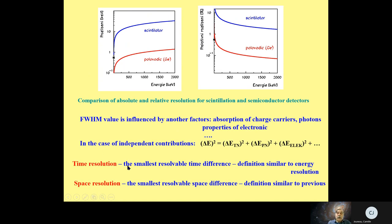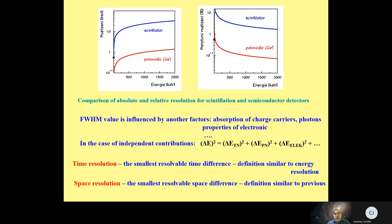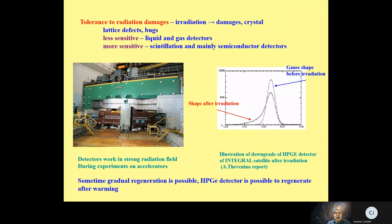In addition to energy resolution, there is also time resolution — the smallest resolvable time difference. The definition is similar to energy resolution, and you obtain the FWHM from the Gaussian peak. Space resolution applies to track detectors, where it is possible to measure position with some resolution. The definition is also similar, but it is possible to have resolution in multiple coordinates, giving a two-dimensional or three-dimensional Gaussian in space.